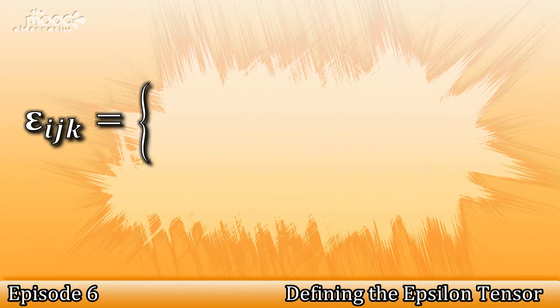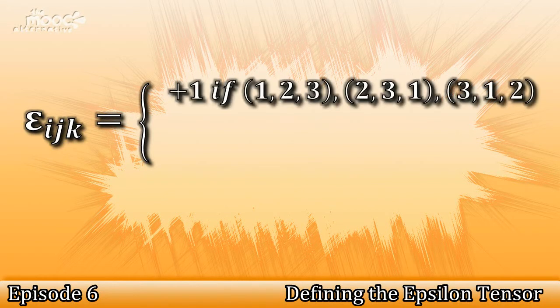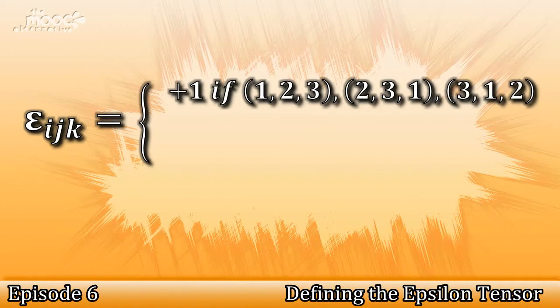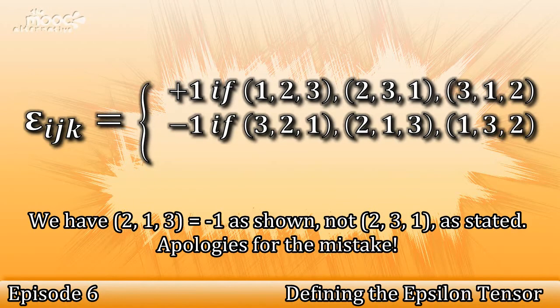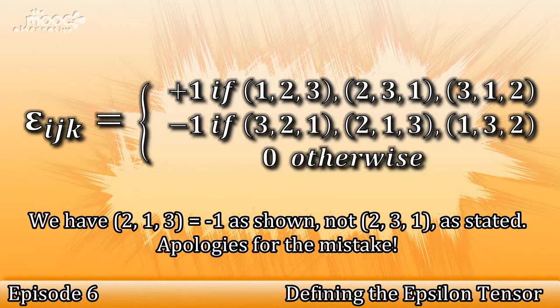Like the Kronecker Delta tensor, the epsilon tensor has a special definition. This time, we define it as epsilon i, j, k is equal to plus 1 if i, j, and k are equal to 1, 2, 3, or 2, 3, 1, or 3, 1, 2; minus 1 if i, j, and k are equal to 3, 2, 1, or 1, 3, 2, or 2, 1, 3; and is equal to 0 otherwise.